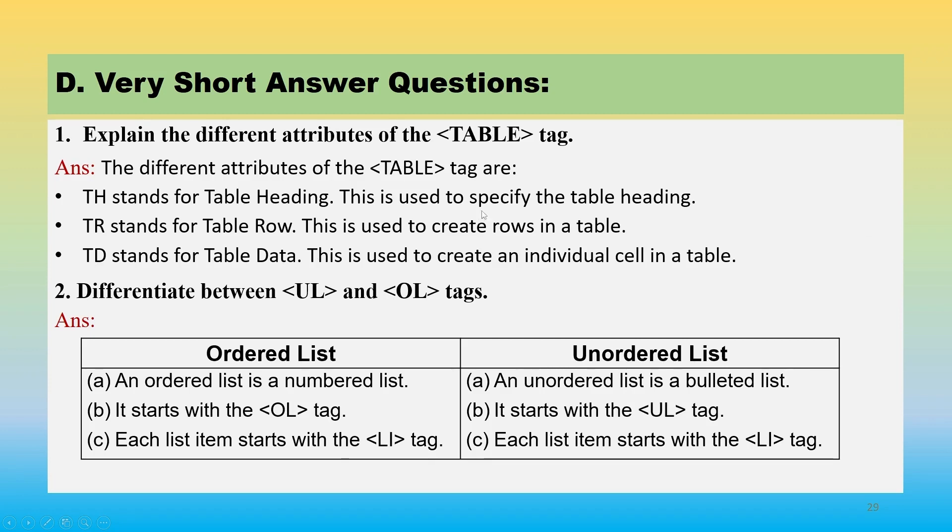Students, you can note down answers in your notebook from here. How will you differentiate between UL and OL list? First of all, we will write the complete name of these tags. An ordered list is a numbered list and unordered list is a bulleted list. Second, it starts with the OL tag and unordered list starts with UL tag. In ordered list each item starts with the LI tag.